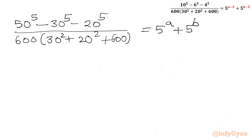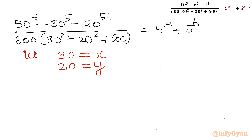Now I will use substitution. Notice that 30 + 20 = 50. So let us consider 30 equal to x and 20 equal to y. From here, 50 = x + y.